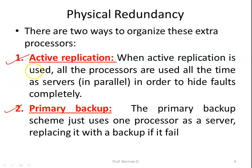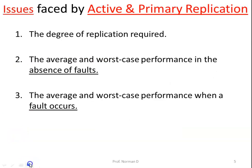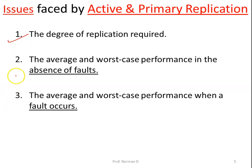With active replication, all the processes are used all the time as servers, in parallel, in order to hide faults completely. Whereas with primary backup, only one processor acts as a server, and it is replaced by the backup server in case it fails. Key issues include the degree of replication required, and the average and worst-case performance both in the absence of faults and when a fault occurs.